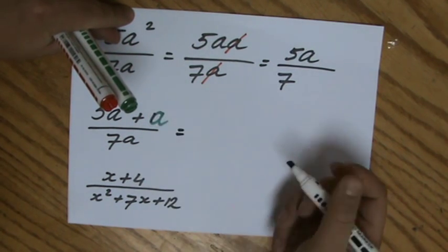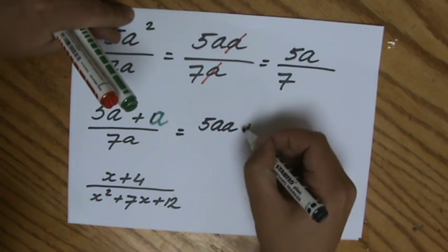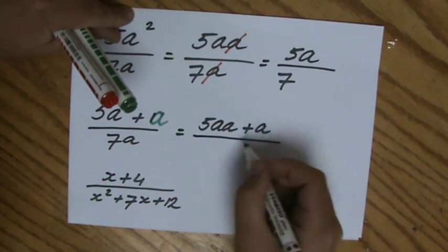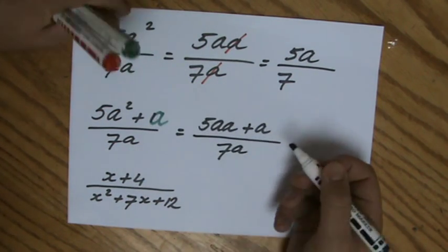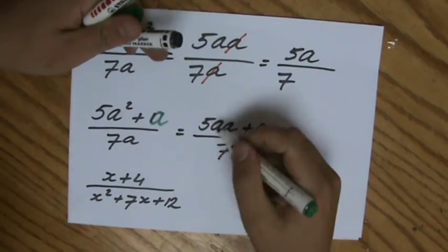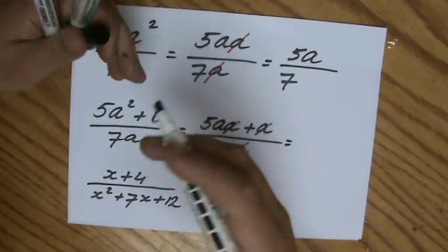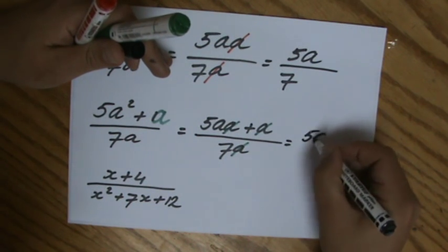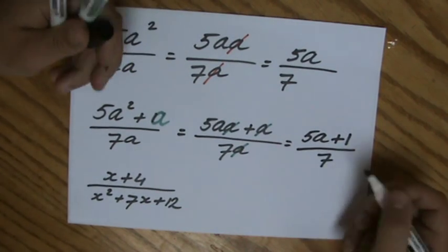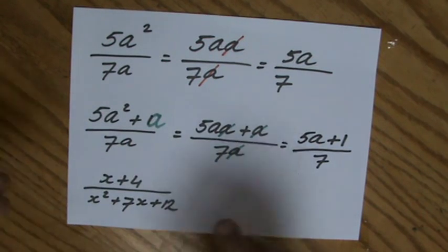Now if I would change the question and change that one into 1a, simplify the fraction. Now there's a common factor. 5a squared plus a, you cannot add those by the way, they're not like terms, the power is different, over 7a. That is an a here, an a there and an a there. That's the common factor. All the terms have that factor. So it's 5a plus 1 over 7. That would be the answer. But be careful, that common factor needs to be in all the terms.